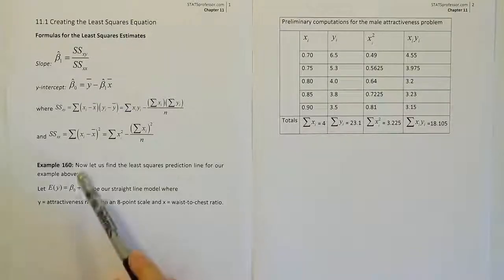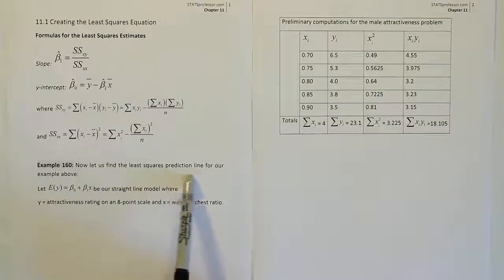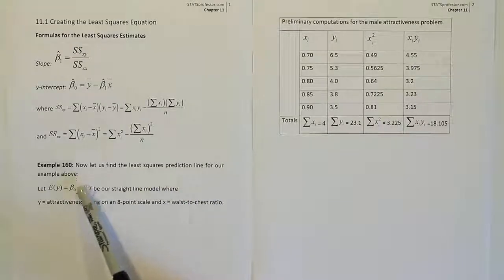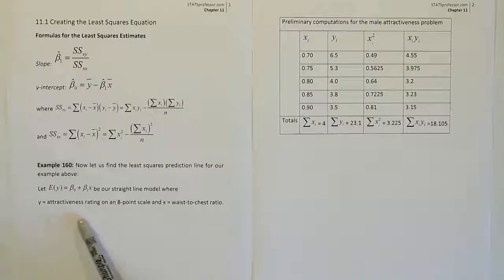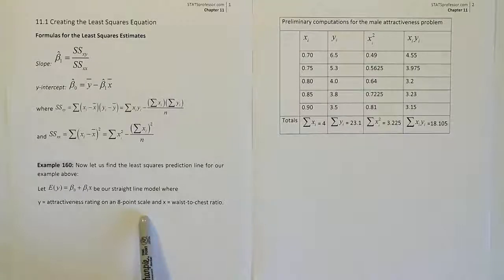Example 160. Now let us find the least squares prediction line for our example above. The example was dealing with this model, which was designed to predict the attractiveness rating on an eight-point scale that was given by women to men based on a photograph of the men.